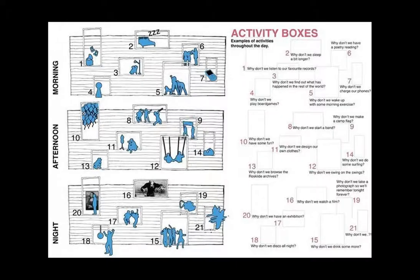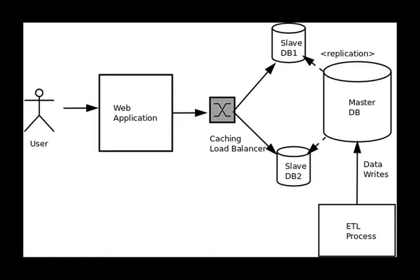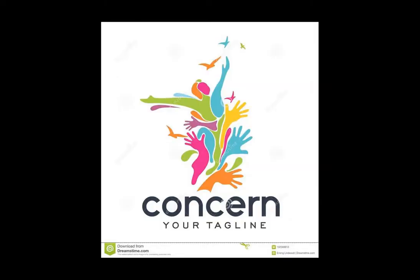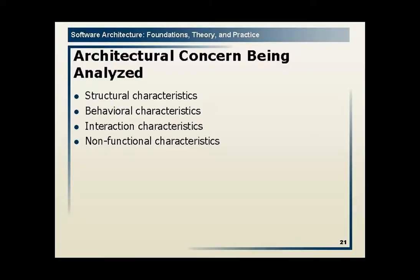Architecture Viewpoints. Software architecture descriptions are commonly organized into views, which are analogous to the different types of blueprints made in building architecture.